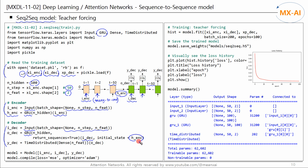We feed the last hidden state of the encoder into the decoder as the initial hidden state. Since the decoder's RNN is a many-to-many model, we set the return sequences argument to true — that is, we use all outputs from all time steps. Finally, we create an output layer using the TimeDistributed class and feed the output of the recurrent layer into this layer.